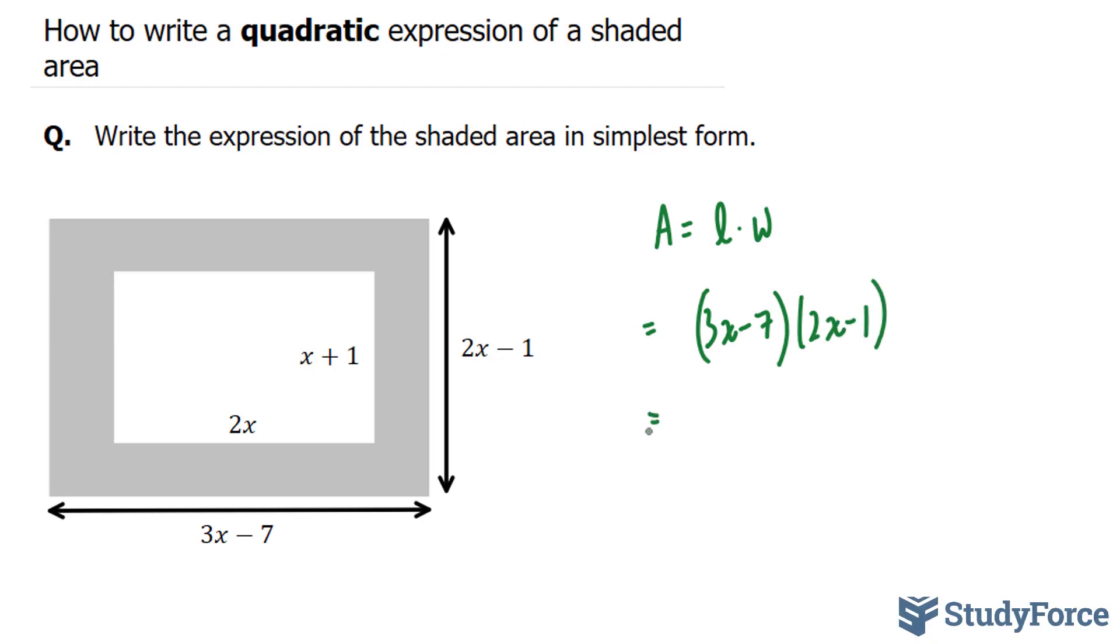Now what we have to do here is expand these two binomials. And to expand it, we start off with this first term. We multiply it to the 2x, and we end up with 6x squared.